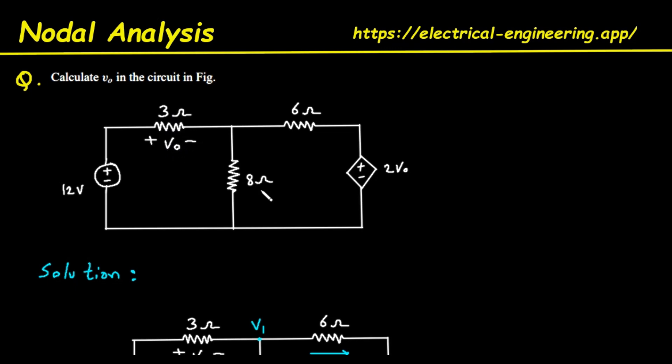In the middle, we have an 8 ohm resistor connected vertically. To the right of that, there's a 6 ohm resistor. And finally, on the far right, we see a diamond-shaped symbol. This represents a dependent voltage source. Its voltage is 2 times V0. This means its value is directly controlled by the voltage across the 3 ohm resistor.